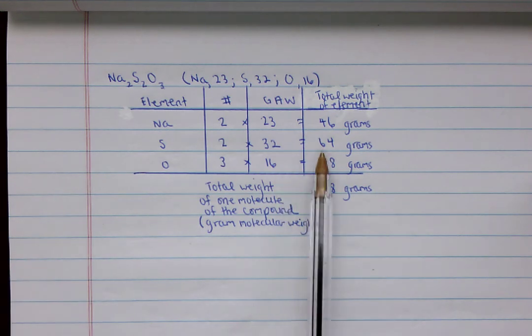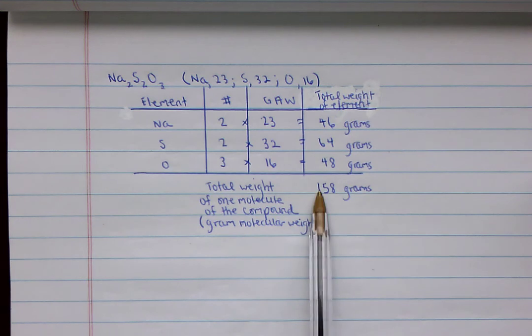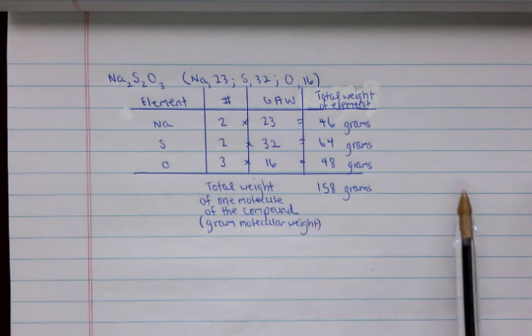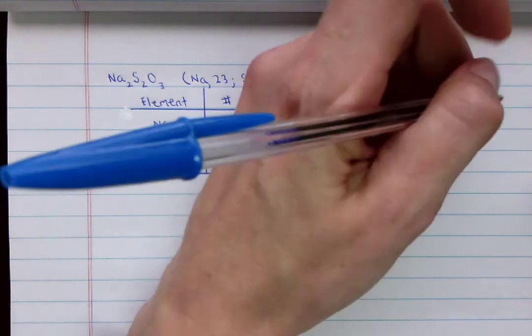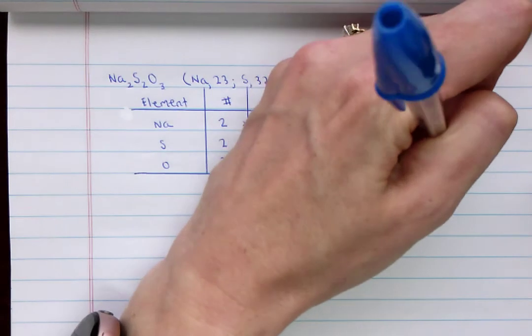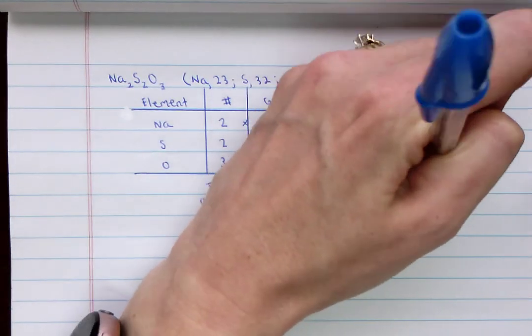And so you would take sodium over the total, and then you would put, so I'll just say here, so example, sodium over the total.